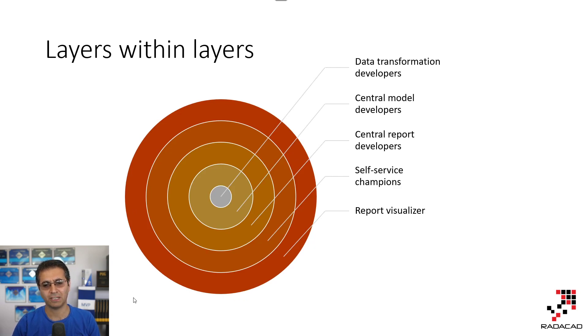In larger organizations, like the end user is not visible in this diagram right now, but in addition to visualizers and self-service champions, your central developer layer might be also split in multiple layers itself. Like you have central report developers, then central model developers, which build model that the report developer use, and data transformation developers, which might be someone using Dataflow or any other data transformation technology to build something that the data modeler uses. So you can have layers within layers.